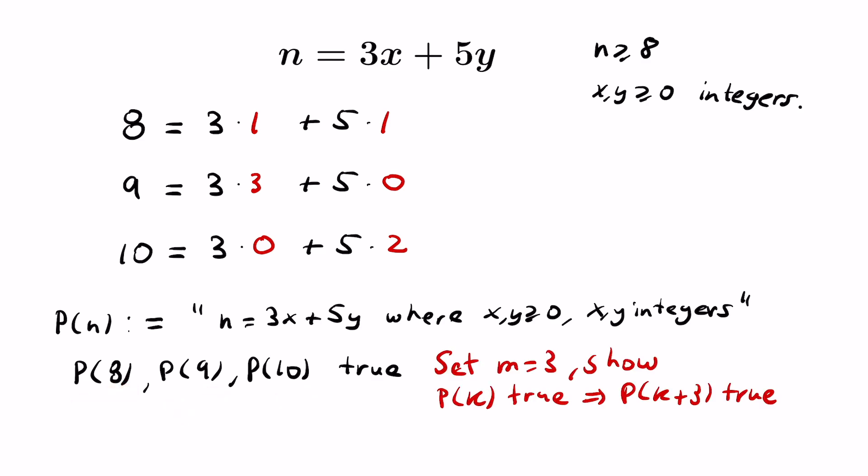Using our non-standard induction, if we set m to be 3, then what we can do is show that if we knew the statement p of k was true, then p of k plus 3 is true. Then we'd be able to get that any positive integer n greater than or equal to 8 can be written in this fashion. The intuition is if we have all these true, then this would give us that p of 11, p of 12, and p of 13 are true, then p of 14, 15, and 16 is true, etc.